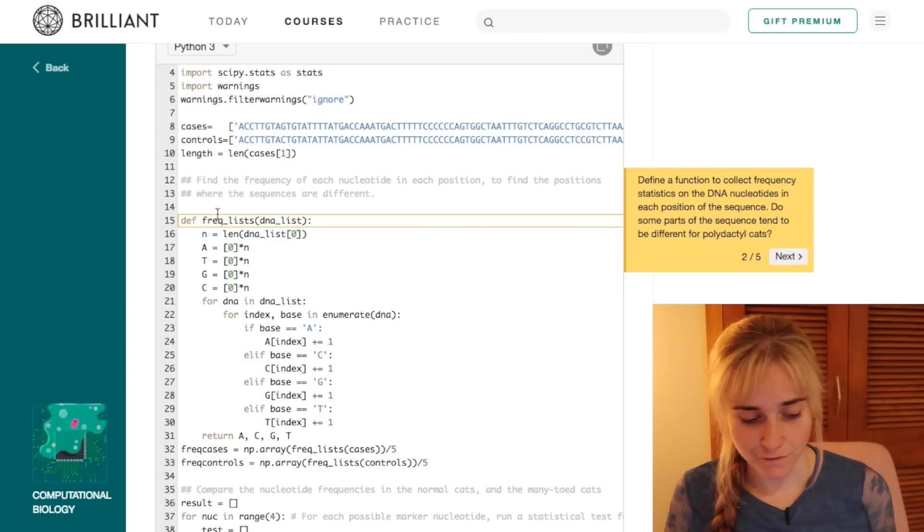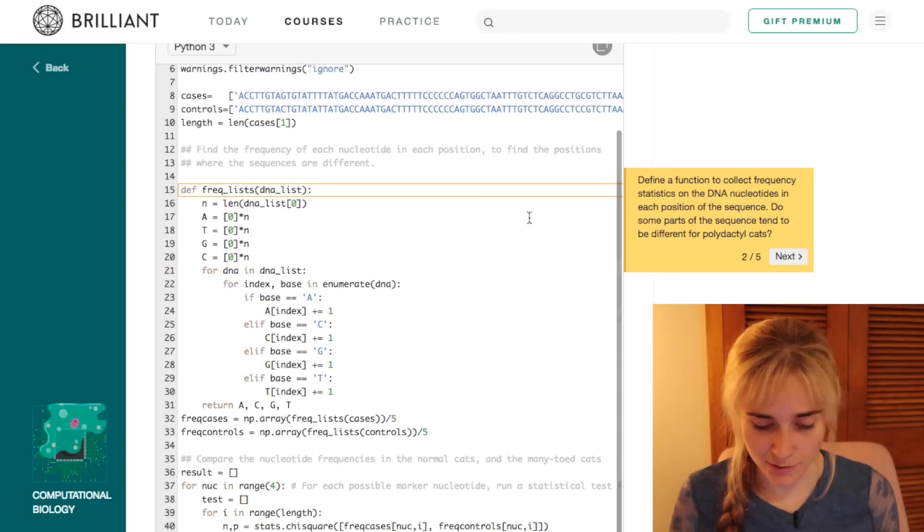We're then defining a function frequency lists which is collecting statistical information about the DNA nucleotides or the bases in each position of the sequence. So we're trying to figure out, do some parts of the sequence tend to be different for the polydactyl cats?